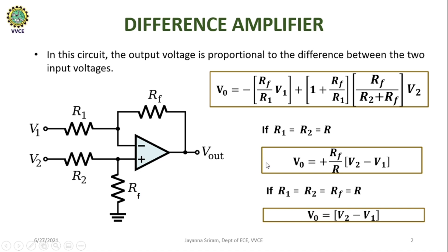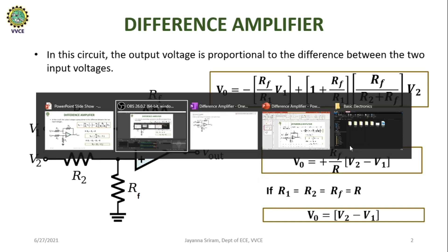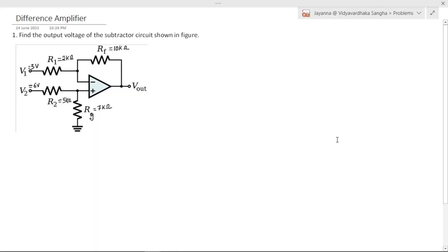Now let us solve few problems related to these equations. The first problem asks us to find the output voltage of the subtractor circuit shown in the figure. We need to find the output voltage V0. In order to find that, we need to use superposition theorem.